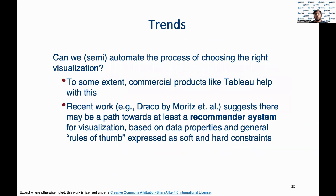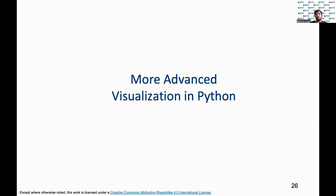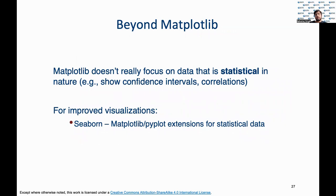Now let us explore if there are any ways of automating the choices for visualization we talked about in the previous slides. This is where reporting tools like Tableau and Power BI come into place. There are some recent research papers that show that recommender systems can also be used to automate these visualization choices. Let's now dive deeper into more advanced Python visualization. Matplotlib does not focus on statistical aspects of the data like showing confidence intervals or correlations. Therefore, we use Seaborn, which is an enhanced extension of PyPlot and Matplotlib, and can be used for complex statistical data.